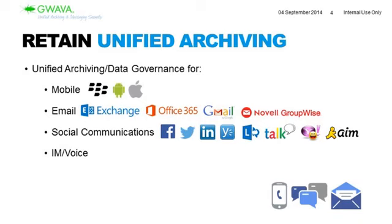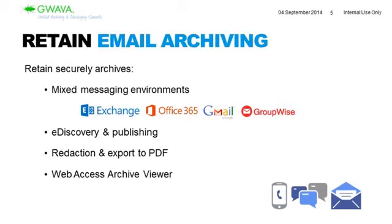Let's go a little deeper and talk in detail about email, and then we'll talk about social and mobile. Retain archives single or mixed messaging platforms, meaning you can view your Exchange, Office 365, Gmail, and/or GroupWise archive from one seamless interface. Easily and quickly you can access those different types of emails. So if you're running Exchange in one location and Gmail in another, that doesn't matter — Retain will integrate with both and archive them into one central archive.